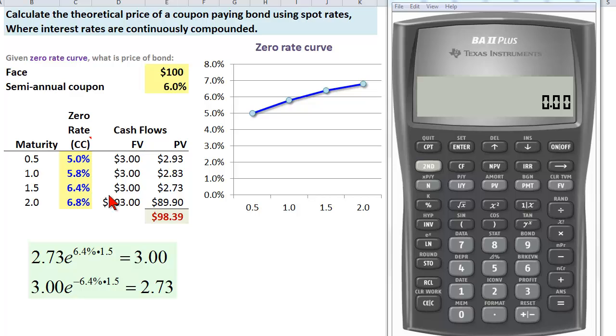So the other thing about this problem is that those interest rates are given to us in continuously compounded terms, so that would make it difficult to use these keystrokes. So let's just assume that the face value of the bond is $100 and that it pays a semi-annual coupon with a coupon rate of six percent per annum.